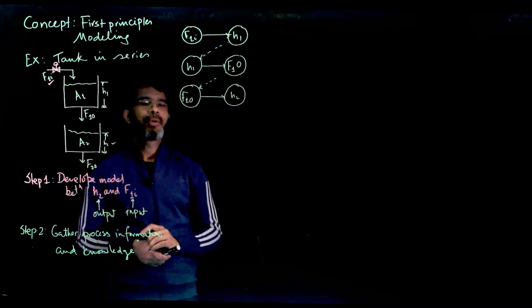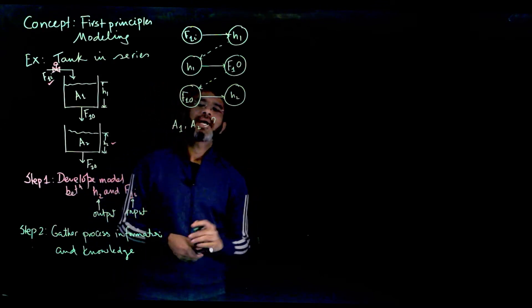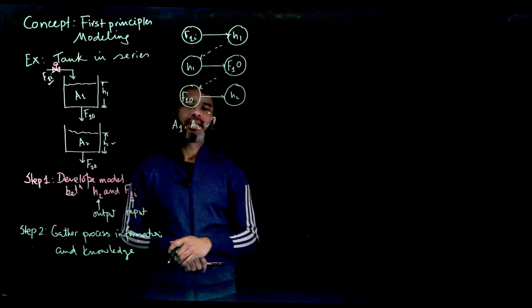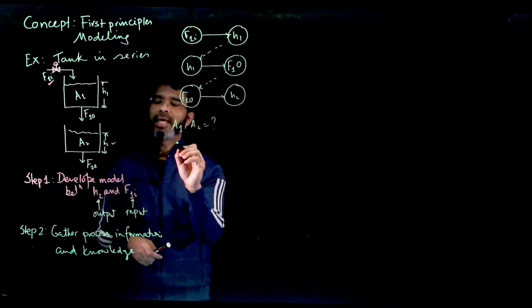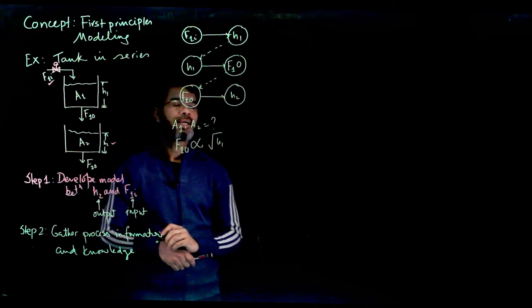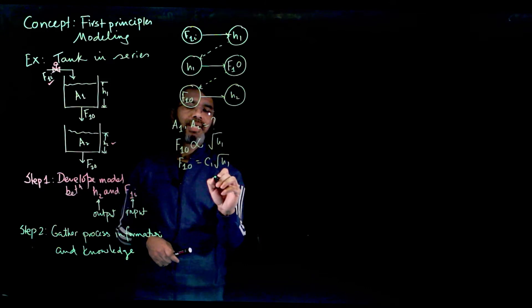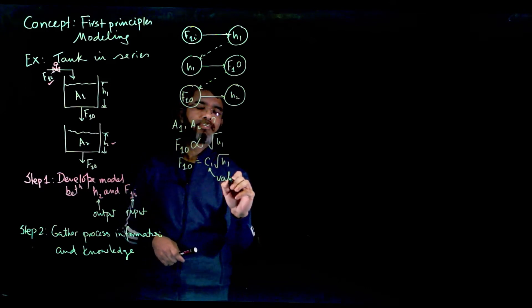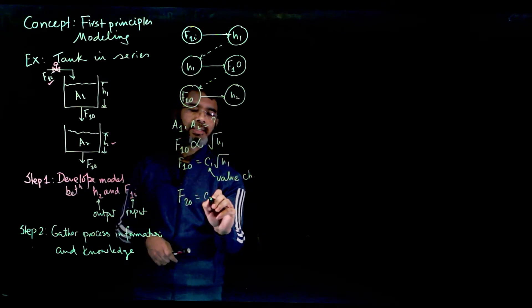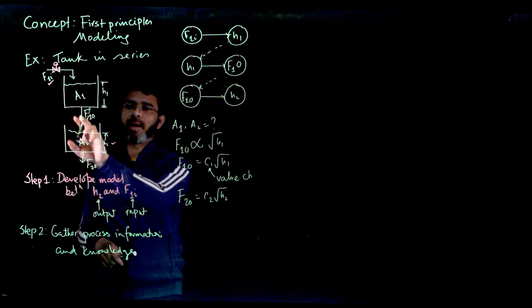So that is about the process knowledge we get. Also we need some information, for example what is A1, what is A2, and the valve characteristics, what are the relation between this outlet flow and the valve. So we know that from the process knowledge that F1O is directly proportional to square root of H1. So that gives you something like F1O equals C1 times square root H1. But this C1 is depending on valve characteristic. Also like F2O we can write it some other constant C2 times square root H2. So again C2 is the valve or the flow rate or the pipe dimensions here.